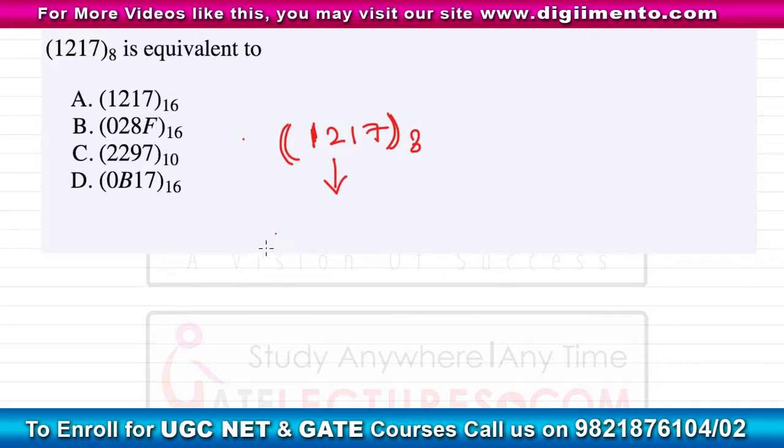So this one will represent 001 in binary, then this two will represent 010 in the binary number system, this one is 001 again, and this seven is 111.